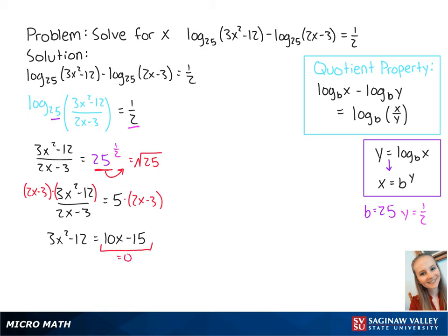To solve for x, we want the right side of the equation to be equal to 0. So we're going to subtract 10x minus 15 from both sides to get 3x squared minus 10x plus 3 equals 0.